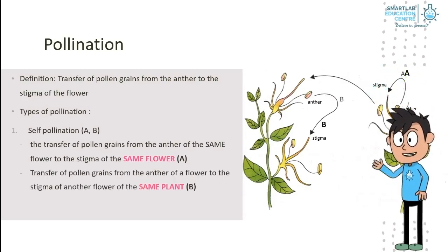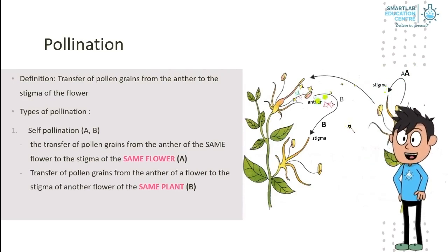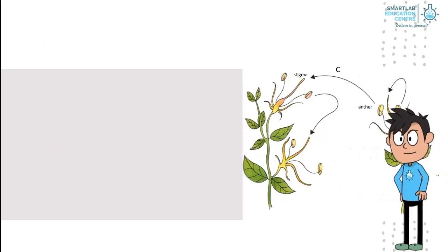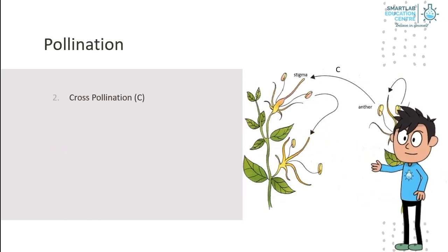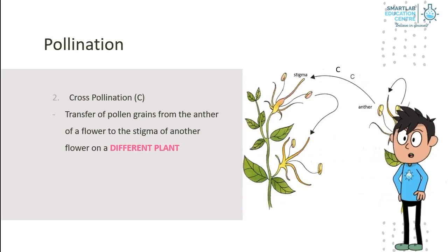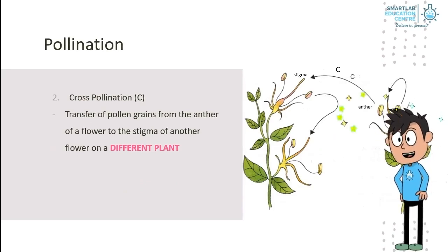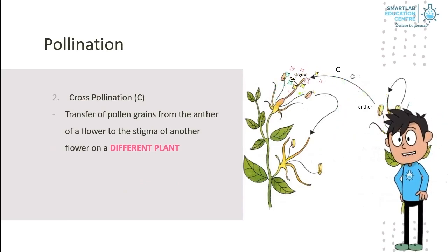Or, it is the transfer of pollen grains from the anther of a flower to the stigma of another flower of the same plant. Cross-pollination is the transfer of pollen grains from the anther of a flower to the stigma of another flower on a different plant.